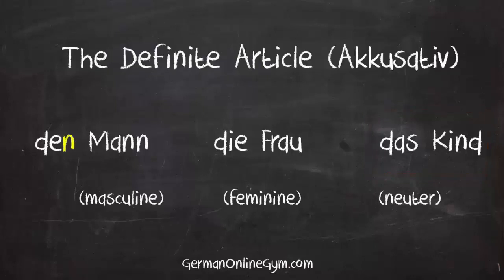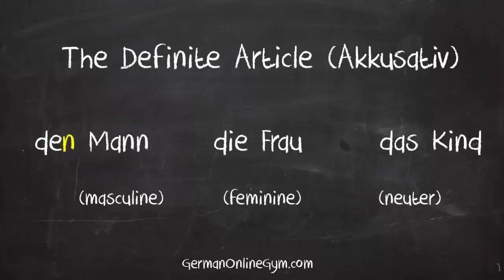Now let's see how this changes in accusative. You see that der became den — der Mann now is den Mann. The feminine and the neuter articles do not change.